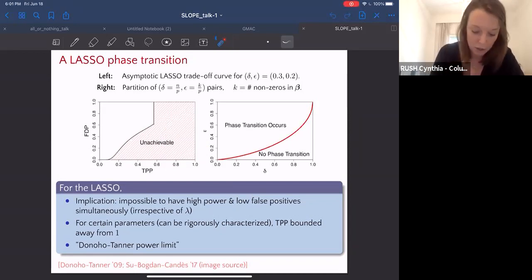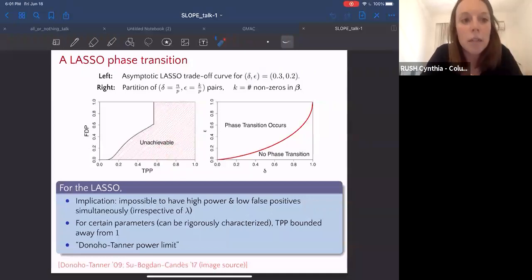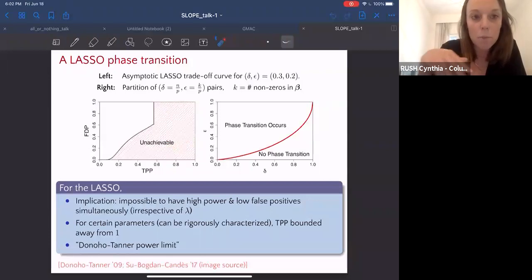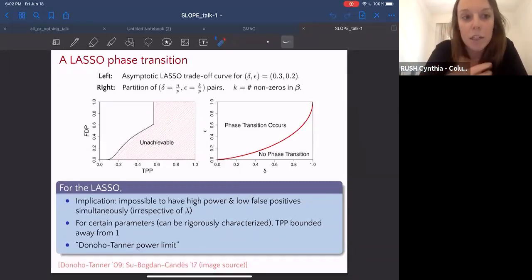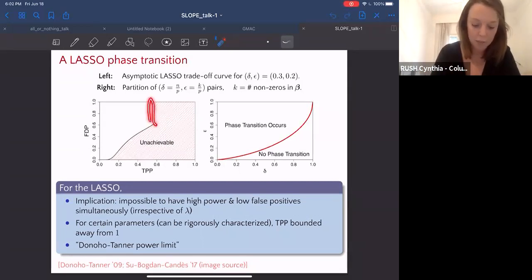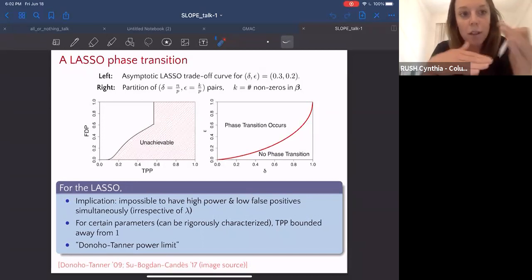The shaded area is the unachievable region by the lasso. In short, what this work implied is that no matter the choice of the regularization parameter and no matter the signal to noise ratio, both types of errors can't be low simultaneously. Moreover, when delta is small, so when my measurement matrix is really fat, or when epsilon is large, meaning my signal is dense, the TPP is going to be asymptotically bounded away from one, again, no matter what you do with the regularization or the SNR.